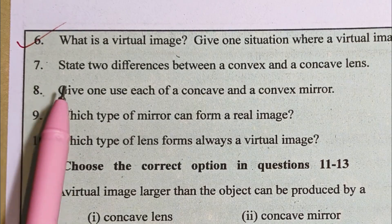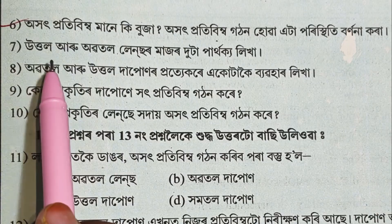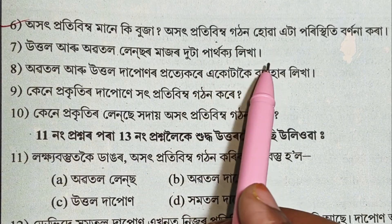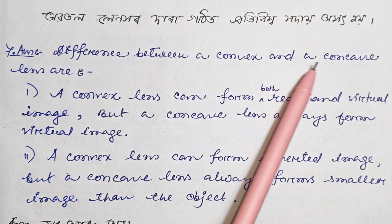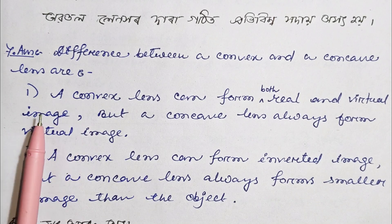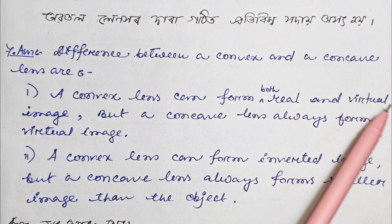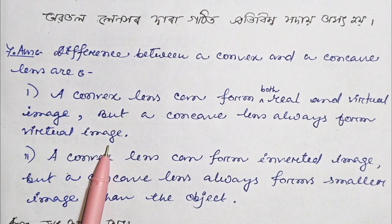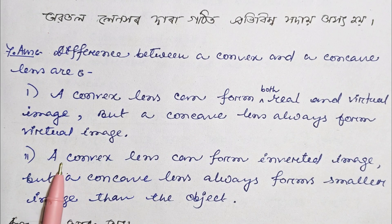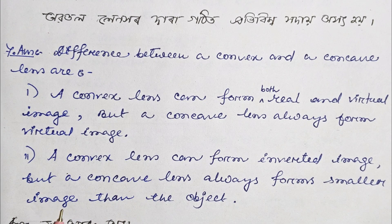Number 7: State two differences between a convex and a concave lens. Number 1: A convex lens can form both real and virtual images, but a concave lens always forms a virtual image. Number 2: A convex lens can form an inverted image, but a concave lens always forms a smaller image than the object.